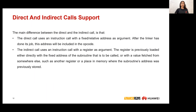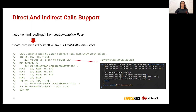The main difference between direct and indirect calls is that the direct call uses an instruction with a fixed or relative address as argument — after the linker has done its job, this address is included in the opcode. The indirect call uses an instruction with a register as argument. The first step is to identify indirect calls, which is done in the Bolt static paths. We need to modify such calls to load the address of a handler function — a trampoline — which forwards the necessary values for the counters to the runtime library. Working with MCinst is not always easy because sometimes it doesn't support certain ARM instructions and you need to rephrase with another one.